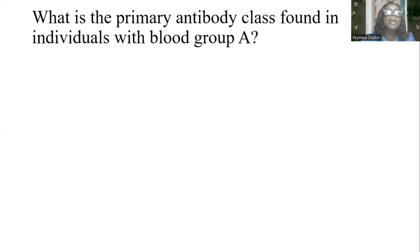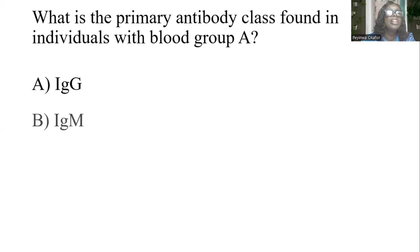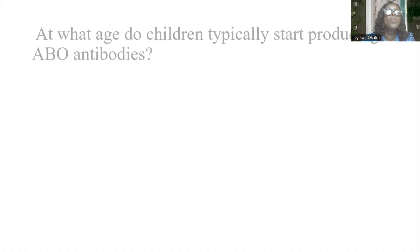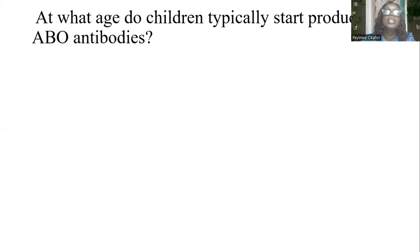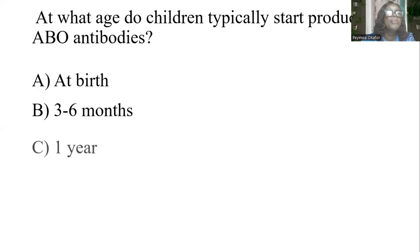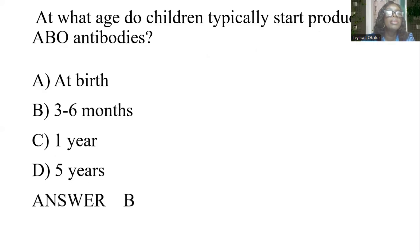What is the primary antibody class found in individuals with blood group A? Options: IgG, IgM, IgE, IgA. The answer is B: IgM. At what age do children typically start producing ABO antibodies? Options: At birth, 3 to 6 months, 1 year, 5 years. The answer is B: 3 to 6 months.